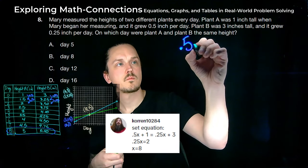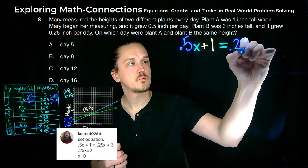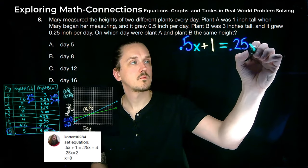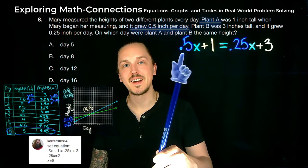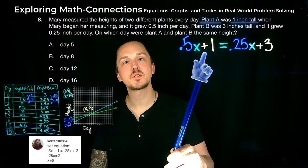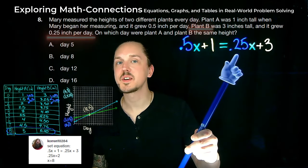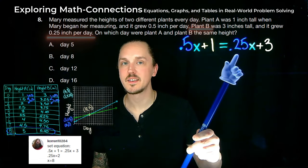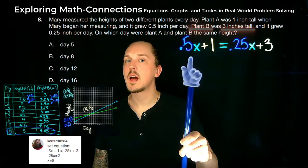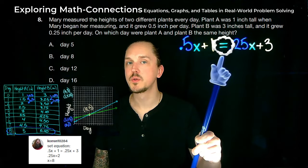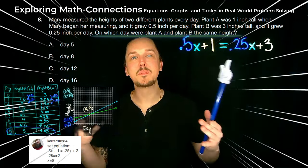0.5 multiplied by x plus 1 equals 0.25 multiplied by x plus 3. The 0.5 denotes plant A's growth rate, and the plus 1 is its starting height. On the other side, 0.25 signifies plant B's growth rate, and the plus 3 is plant B's initial height. When both expressions are equal to one another, it signifies the plants are of the same height.